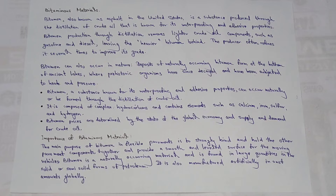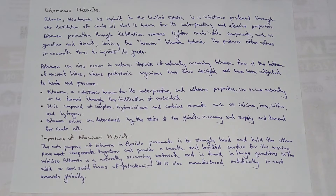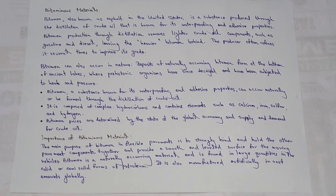Bitumen is a substance known for its waterproofing and adhesive properties, and can occur naturally or be formed through the distillation of crude oil. It is composed of complex hydrocarbons and contains elements such as calcium, iron, sulfur, and hydrogen.